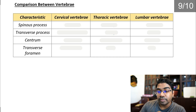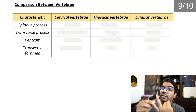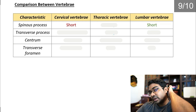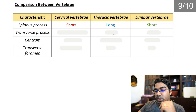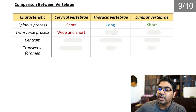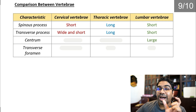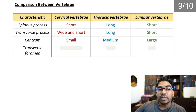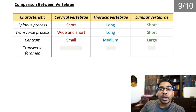Let's compare vertebrae. In humans we have the cervical, thoracic, and lumbar vertebrae. The spinous process is short in the cervical and lumbar vertebrae, but in the thoracic vertebrae it is very long and bends downwards. The transverse process is very wide and short in the cervical vertebrae, long in the thoracic vertebrae, and short in the lumbar vertebrae. The lumbar vertebrae has the largest centrum, supporting the weight of the upper body; the thoracic has a medium-sized centrum; and the cervical has a very small centrum — size increases from top to bottom.